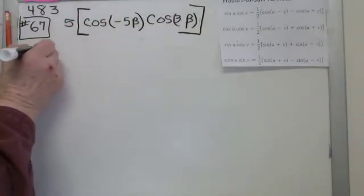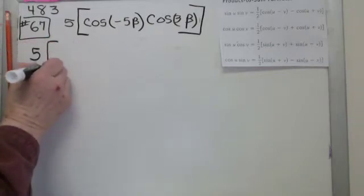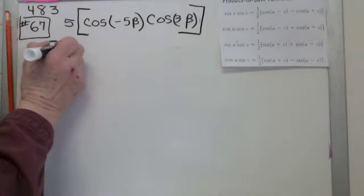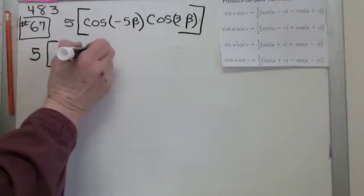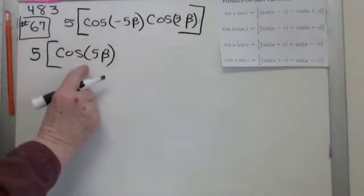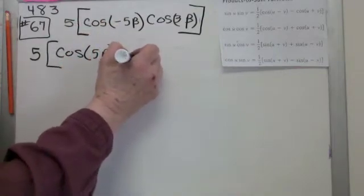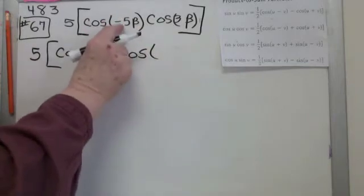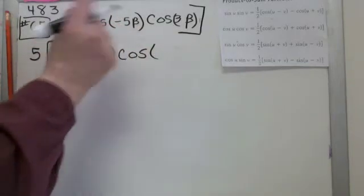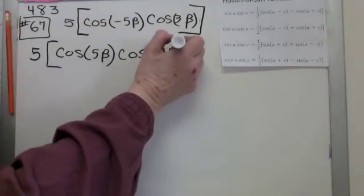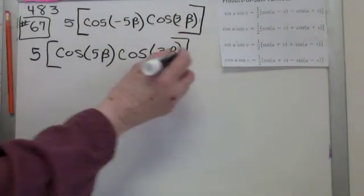And using the even-odd identities, I rewrite this. The cosine of minus 5 beta is the same as the cosine of 5 beta. Using the identity for the substitution. You need to check these before you use them, because on some of them, the minus makes a minus out in front. So always check your rule before you rewrite the substitution.